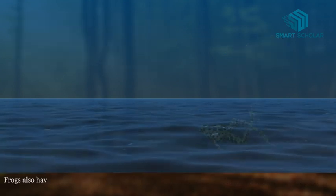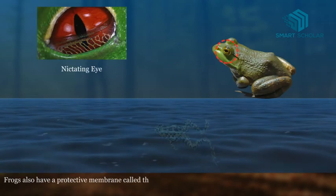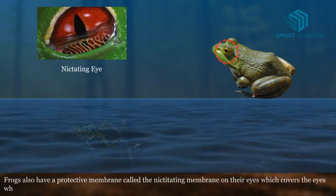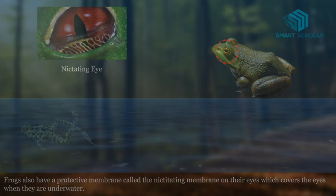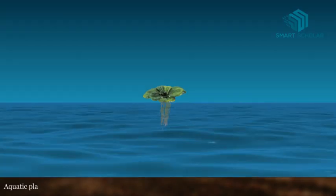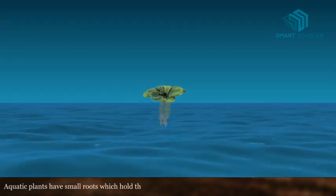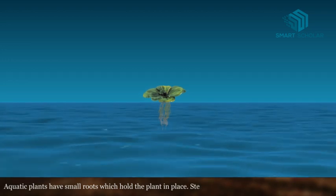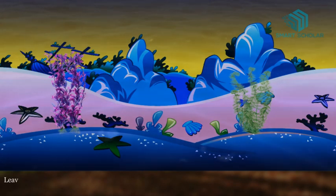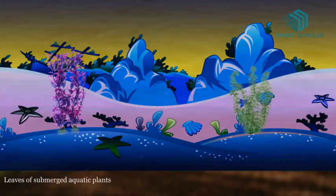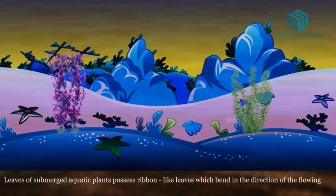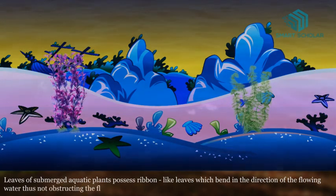Frogs also have a protective membrane called the nictitating membrane on their eyes, which covers the eyes when they are under water. Aquatic plants have small roots which hold the plant in place. Stems are soft and light. Leaves of submerged aquatic plants possess ribbon-like leaves which bend in the direction of the flowing water, thus not obstructing the flow of water.